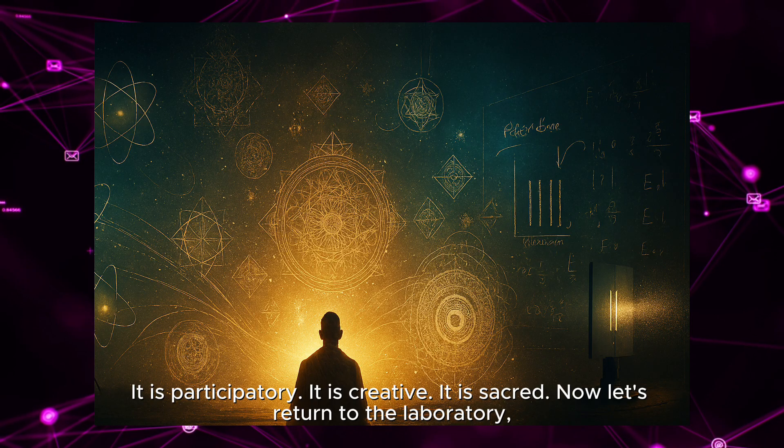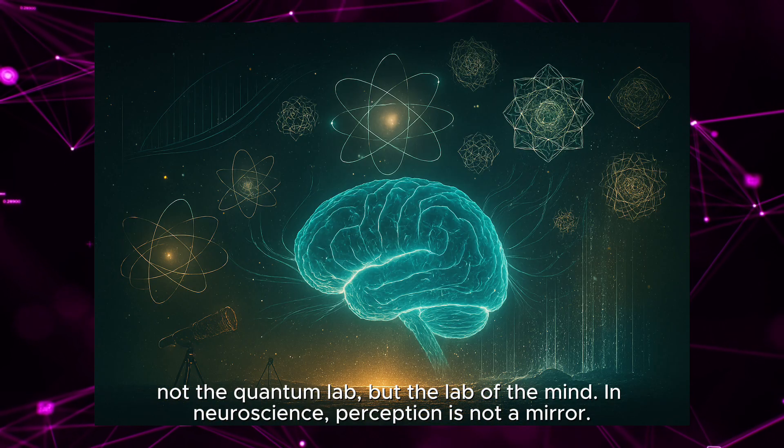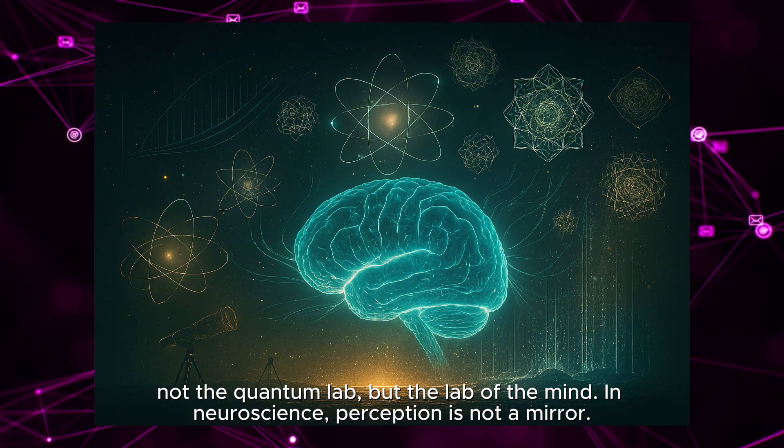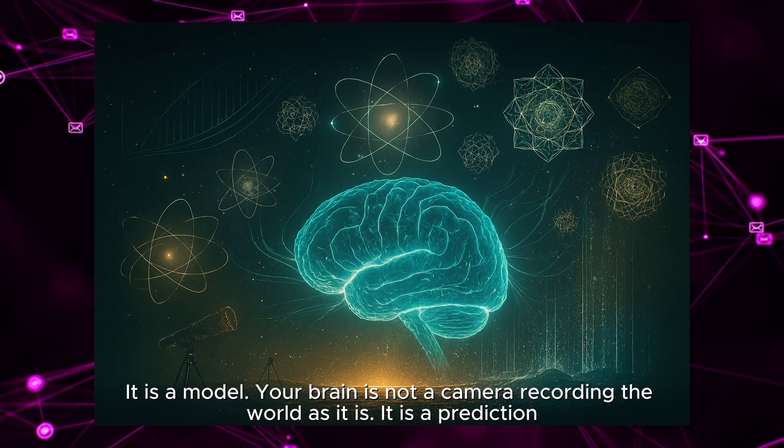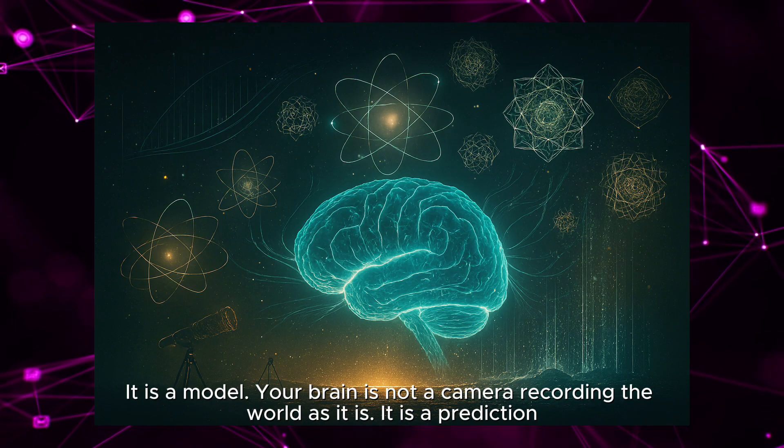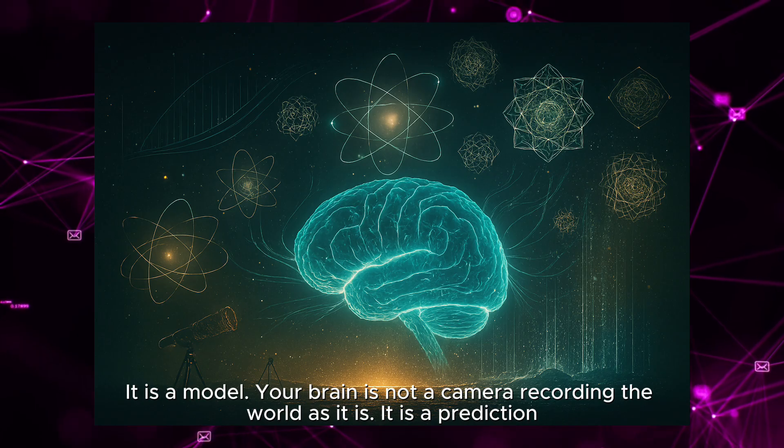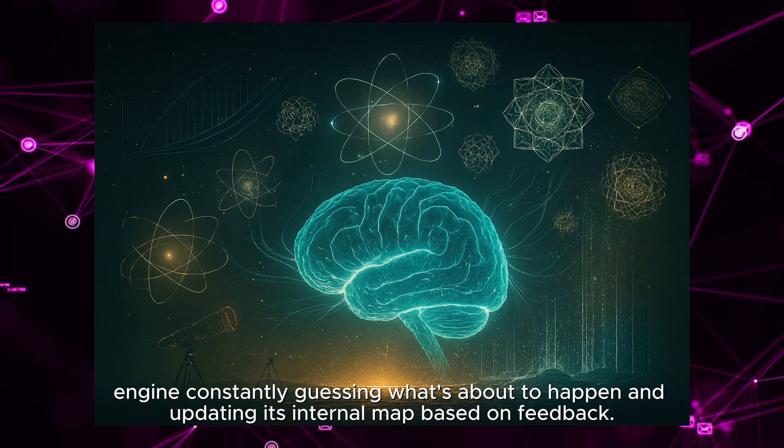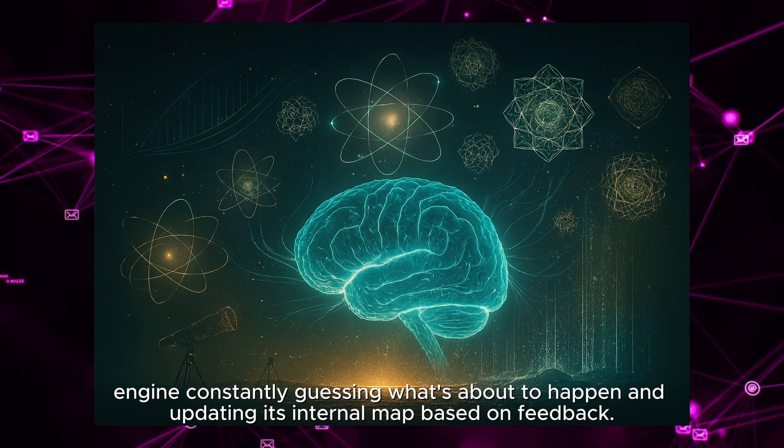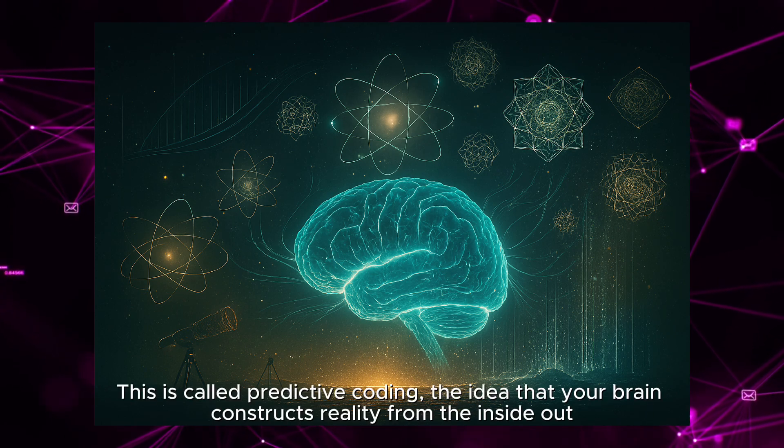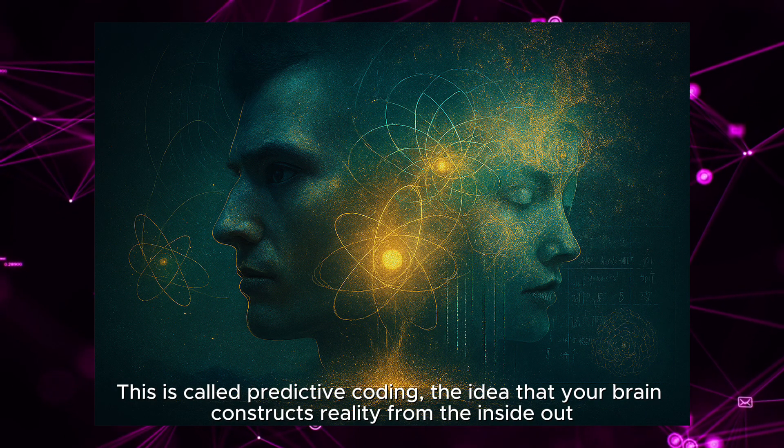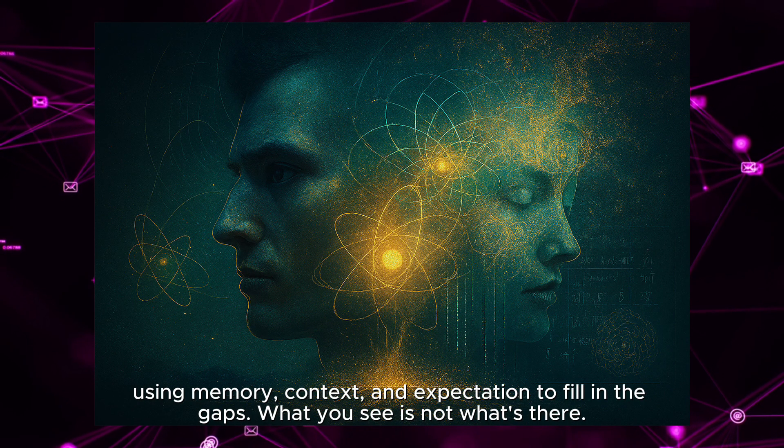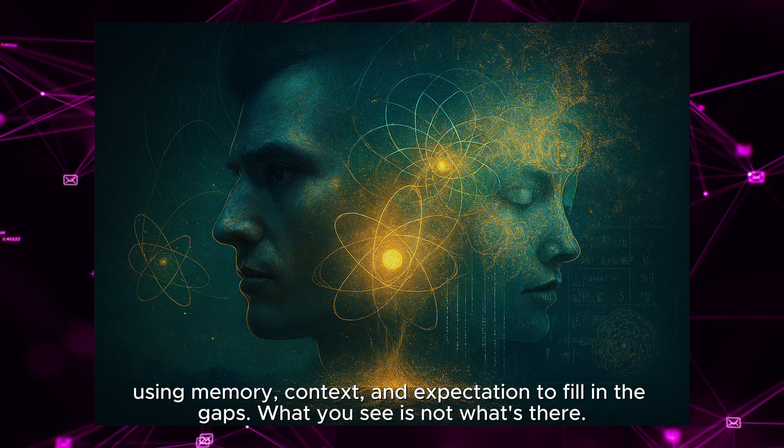Now let's return to the laboratory, not the quantum lab, but the lab of the mind. In neuroscience, perception is not a mirror. It is a model. Your brain is not a camera recording the world as it is. It is a prediction engine, constantly guessing what's about to happen and updating its internal map based on feedback. This is called predictive coding. The idea that your brain constructs reality from the inside out, using memory, context, and expectation to fill in the gaps.